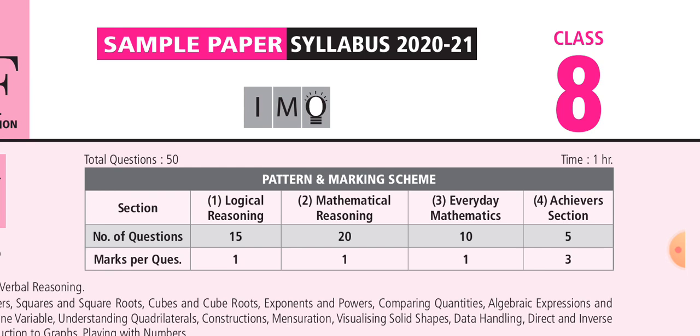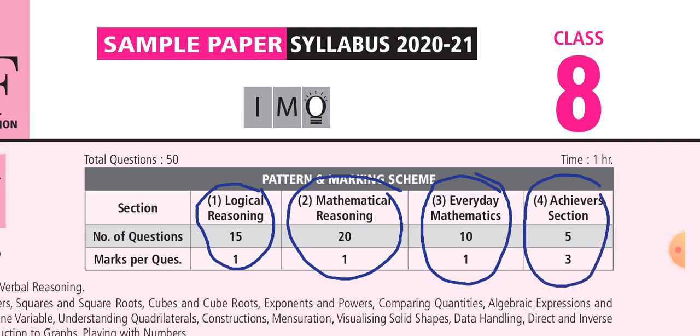In the International Mathematics Olympiad, 4 sections are divided. Total number of questions are 50. The sections are logical reasoning, 15 questions carrying 1 mark each. Mathematical reasoning carrying 20 questions, 1 mark each. Everyday Mathematics, 10 questions, 1 mark each. And Achiever section carrying 5 questions of 3 marks each.